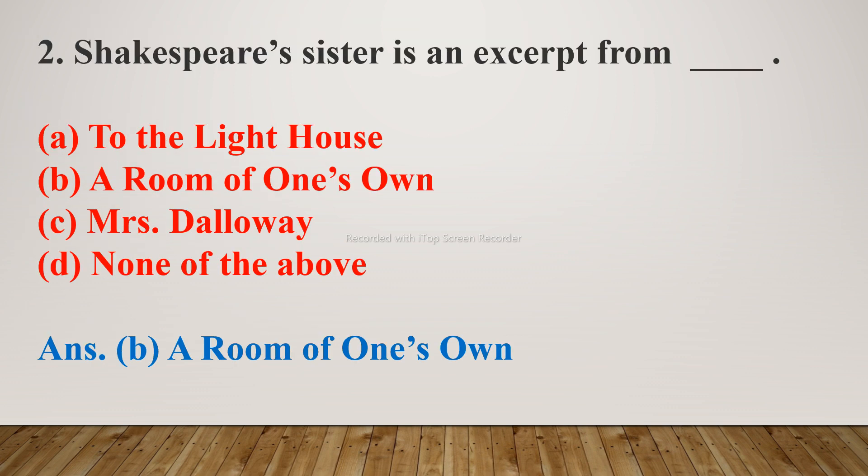The second question is: Shakespeare's Sister is an excerpt from — the options are A. To the Lighthouse, B. A Room of One's Own, C. Mrs. Dalloway, D. None of the above. The right answer is B. A Room of One's Own.